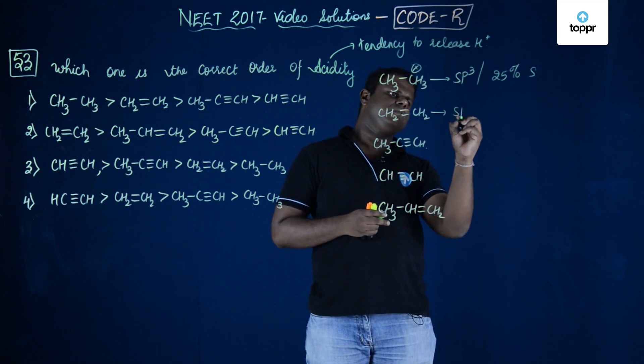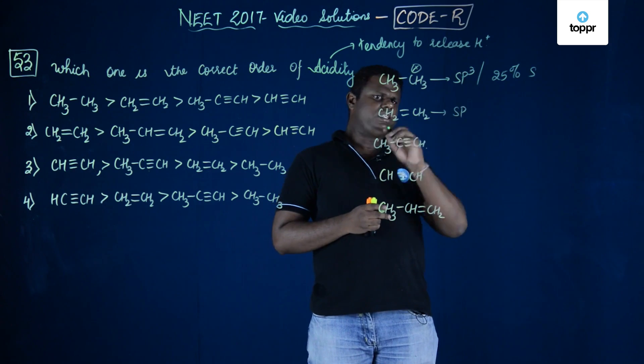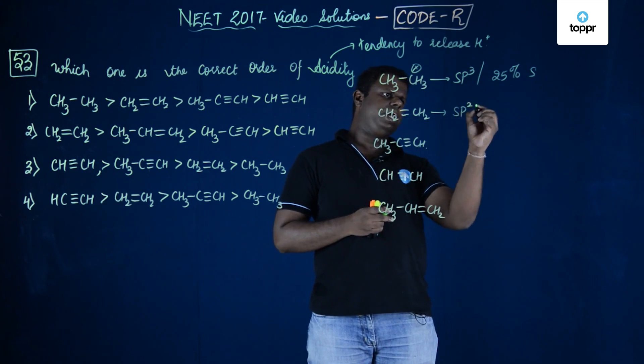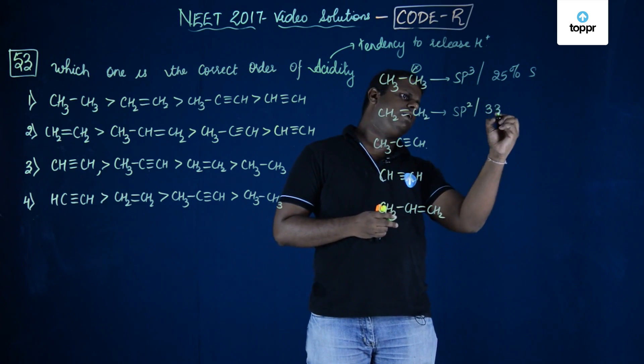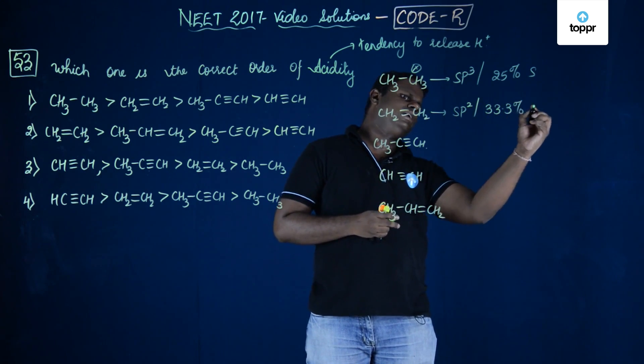If you could see here, this has basically SP2 hybridization and this has 33.33% S character.